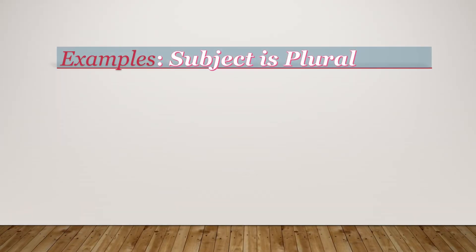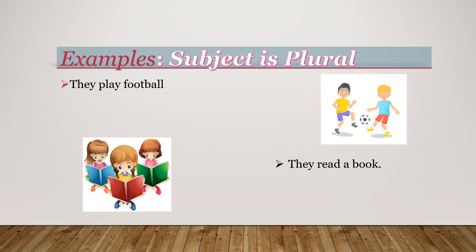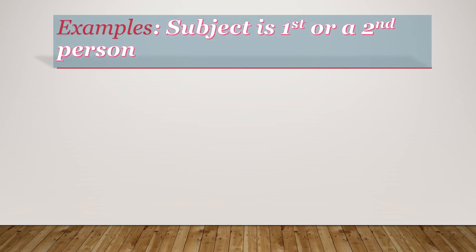Now, let us see some examples where the subject is plural. They play football — here, they is plural, and we have also used the plural verb, that is play. Second example: They read a book — here, they is a plural subject, and read is also a plural verb. These examples were following the rule of singular subject with singular verb and plural subject with plural verb, since the subject was third person.